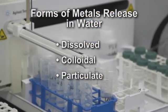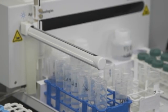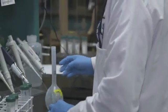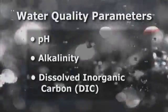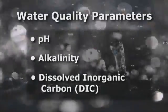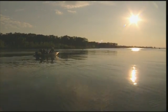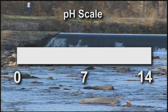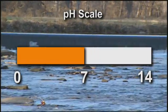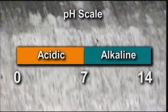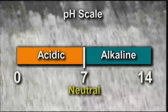Critical water quality parameters that affect internal corrosion should be considered when trying to understand the causes of corrosion and metals release issues. The most significant water quality parameters with regard to the corrosivity of water are pH, alkalinity, and dissolved inorganic carbon, or DIC. The pH of water is a measure of the hydrogen ion concentration. The pH scale ranges from 0 to 14: values less than 7 are considered acidic, values greater than 7 are considered alkaline or basic, and a measure of 7 is considered neutral.